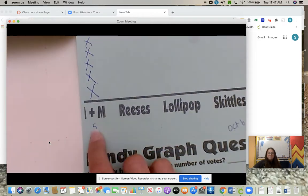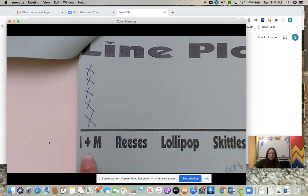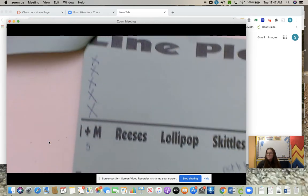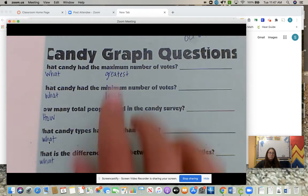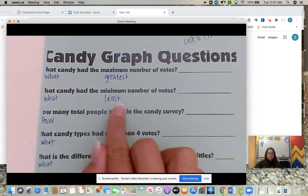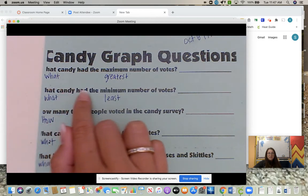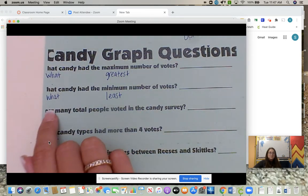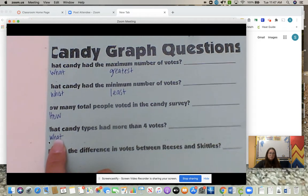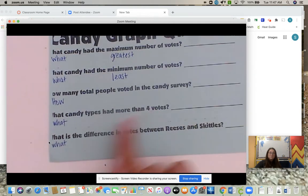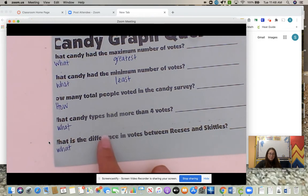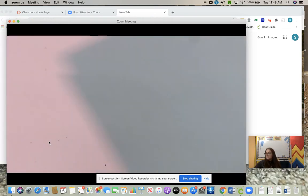Line plot. I wrote five on the bottom so I wouldn't forget. M&M is five. So I draw five X's above M&Ms. So one, two, three, four, five. And then you're going to answer the questions. Maximum means greatest. So what candy had the greatest number of votes? Minimum means least. So what candy had the least number of votes? How many total people voted in the candy survey? What candy types had more than four votes? And what is the difference in votes between Reese's and Skittles? Difference means subtract. That math verb means subtract. So that is your math homework.